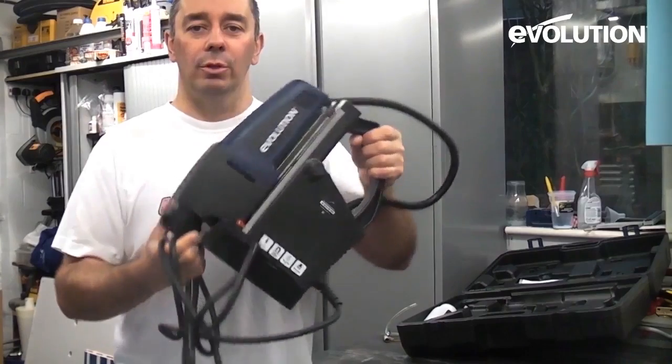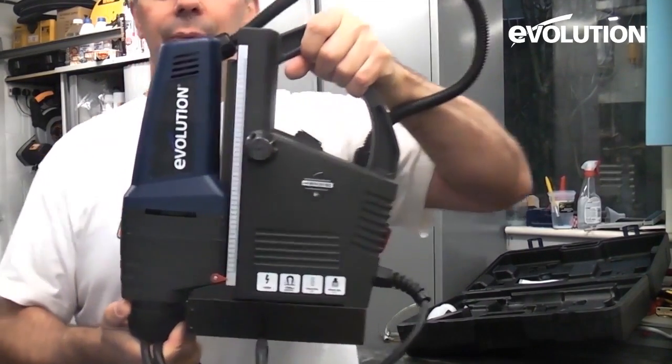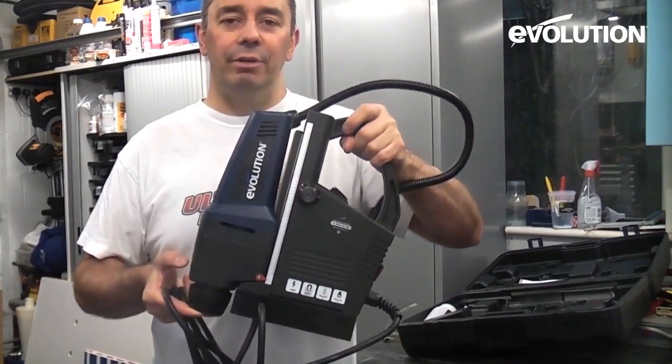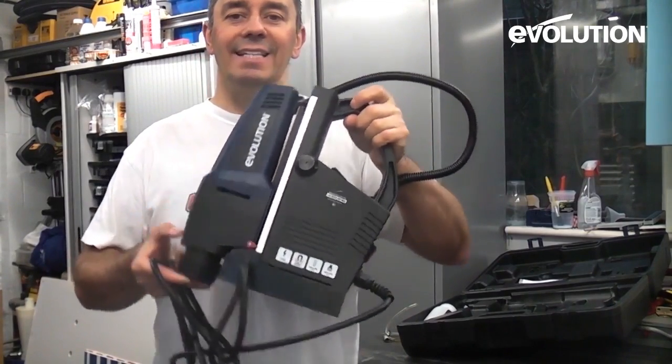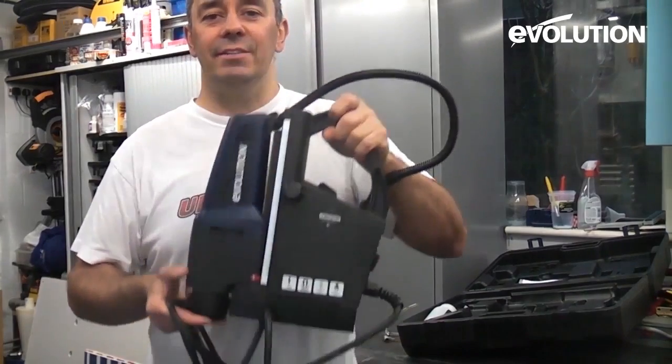You can also fit a normal chuck to this which enables you to use a traditional drill bit. Compared to other mag-based drills, this machine is extremely light. Not only that, but the actual magnet on this machine is very powerful.